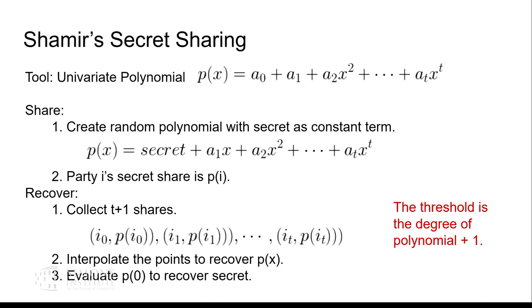Maybe the most widely used secret sharing scheme is Shamir secret sharing. The high-level idea is you set the constant term of a polynomial as your secret, and you evaluate the polynomial on some other points, and you use these points as your secret shares. So when you want to recover the secret, you just interpolate t points and recover the polynomial, and then evaluate on zero to get your constant term, which is your secret. The threshold of Shamir's secret sharing is the degree of the polynomial plus one.